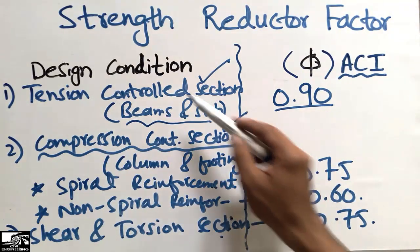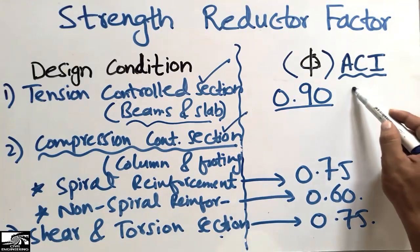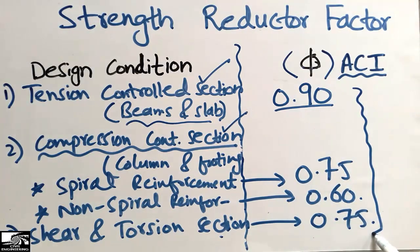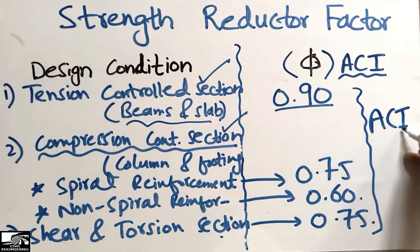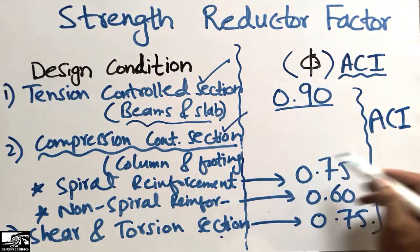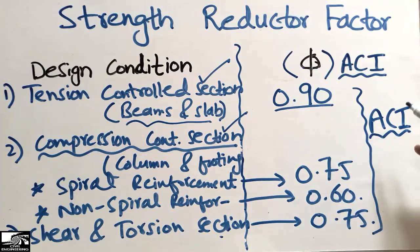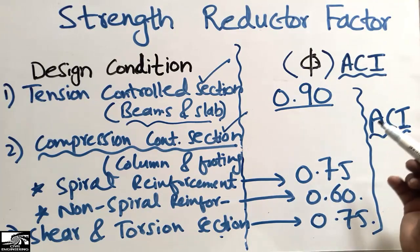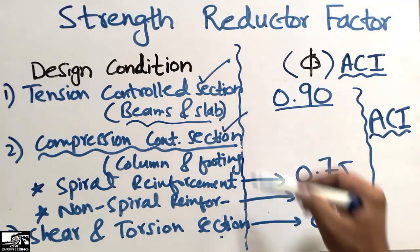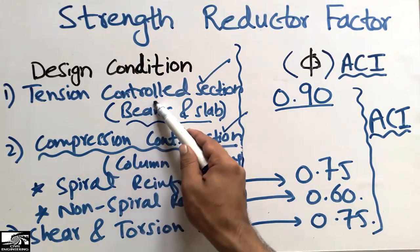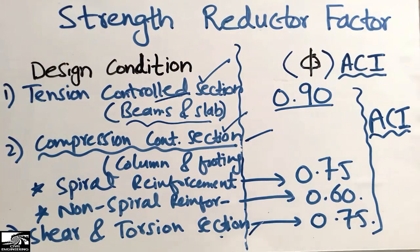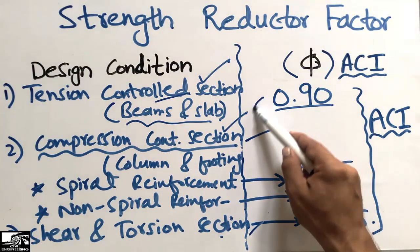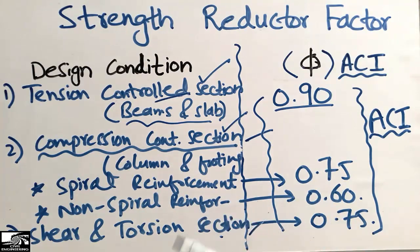For all these member types, we have specified different values of the strength reduction factor as recommended by the American Concrete Institute. All engineering codes also follow these ACI-recommended values when designing structural members — whether tension control, compression control, or shear and torsion control sections. We must remember to multiply these values when designing our structural members.